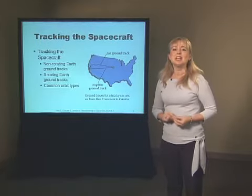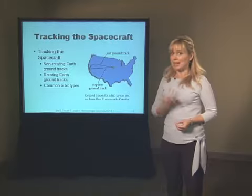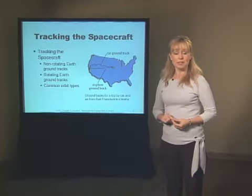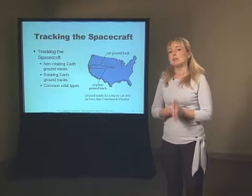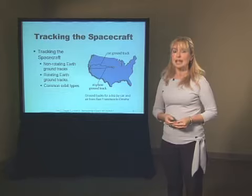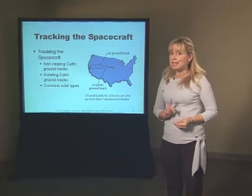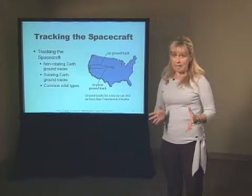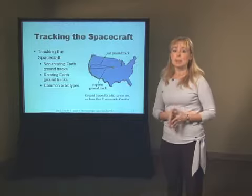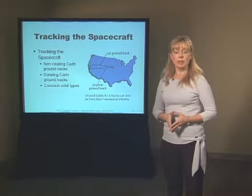We're going to look at this using a simple, non-rotating Earth example first, and then add Earth's rotation. Then we'll look at some basic types of orbits. A spacecraft's ground track is a trace of the spacecraft's path over Earth's surface. Studying ground tracks has two main purposes. The first is that by knowing the ground tracks of a satellite, we can show what a satellite in orbit can cover on the ground. And second, given a ground track, we can determine what kind of orbit a satellite is following.